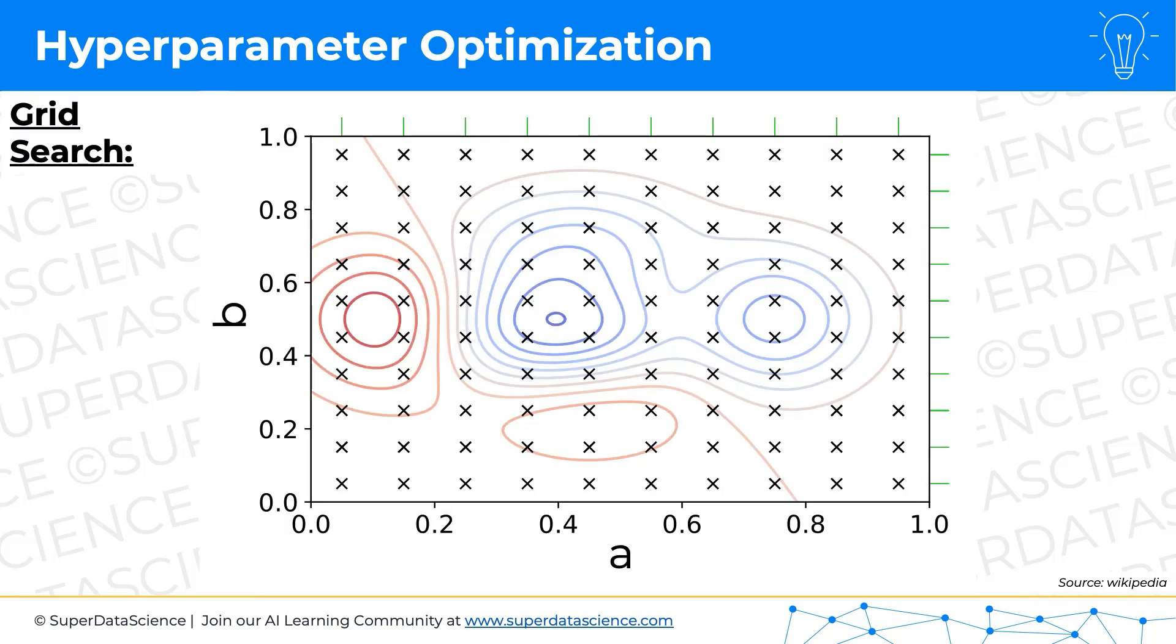Okay, so the first one is grid search. So this is what it looks like. First, we're going to understand what we're looking at here. So this is hyperparameter A and hyperparameter B. Just for argument's sake, we've assumed they're from zero to one. Each one of them has ranges from zero to one.